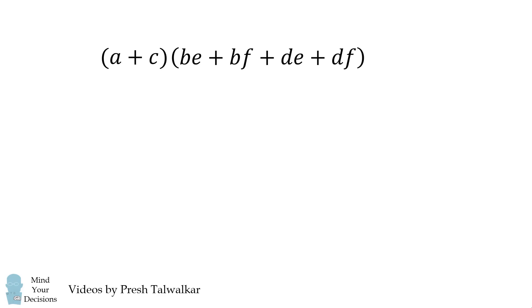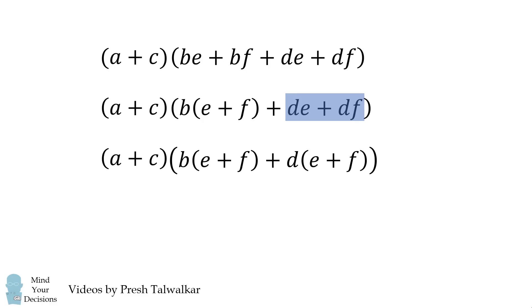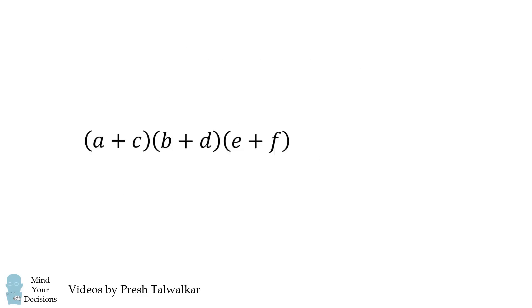Let's continue factoring. The first two terms here have a common factor of B. The next two terms have a common factor of D. We then have a common factor of E plus F. So we get the following factorization for the sum of all these vertices. It'll be (A + C) multiplied by (B + D) multiplied by (E + F).